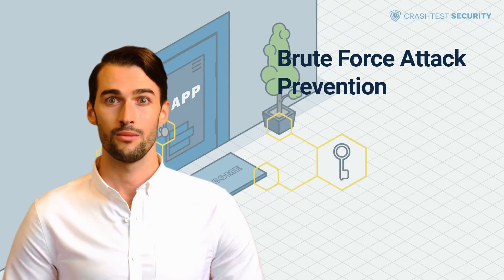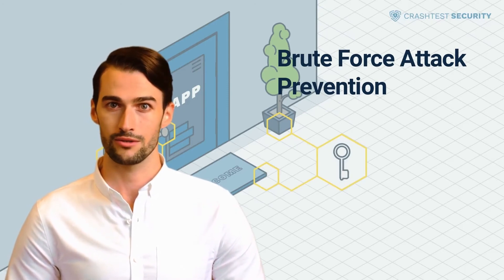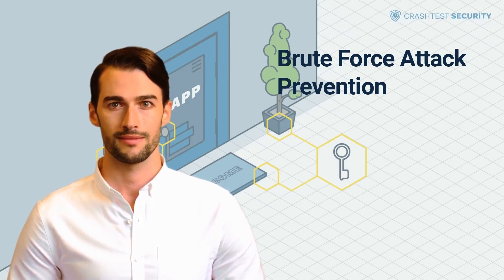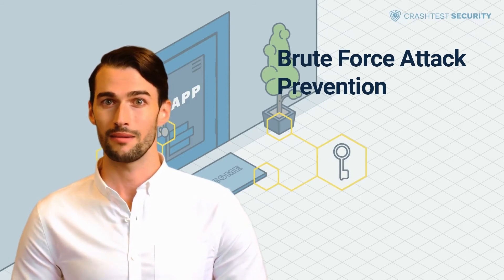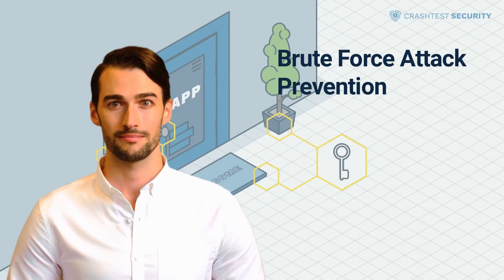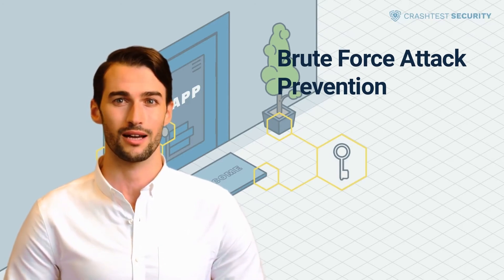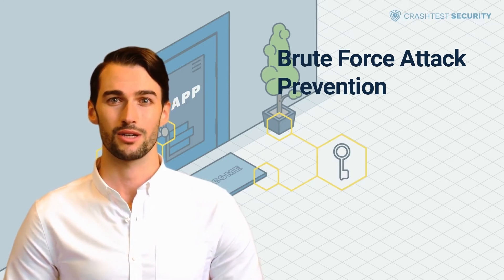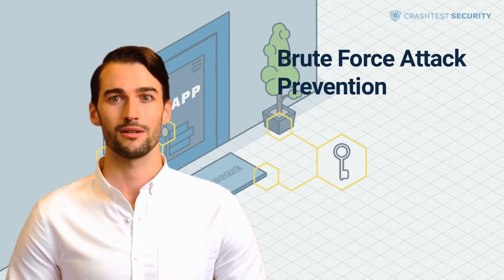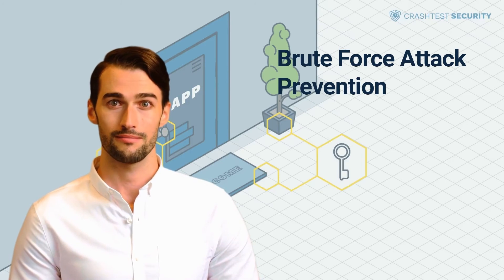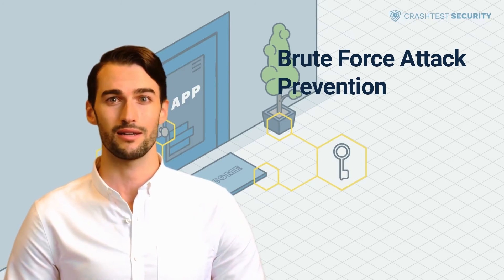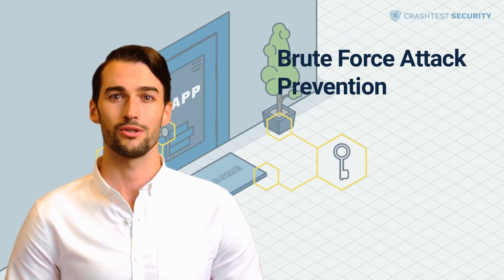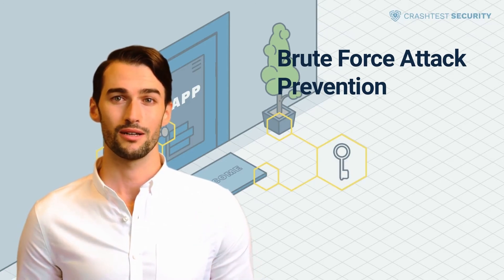To protect against brute force attacks, organizations can implement some or all of the following measures. Institute a lockout policy that limits the number of login attempts and locks accounts after several failed attempts. Implement progressive delays and slow down attacks by introducing delays between failed login attempts. Use CAPTCHA because brute force tools cannot perform CAPTCHA tasks, which creates a hurdle for the automated nature of this attack. Institute a strong password policy, reject weak passwords as a principle, and instruct robust and complex passwords and periodic password changes. Close down unused accounts by removing them with high-level permissions as they constitute a severe risk. Use multi-factor authentication since it provides an additional security layer that requires a greater degree of security compromise to be successful.